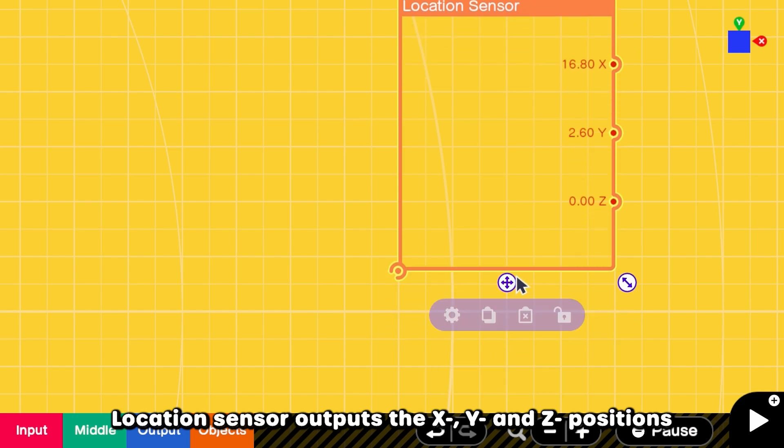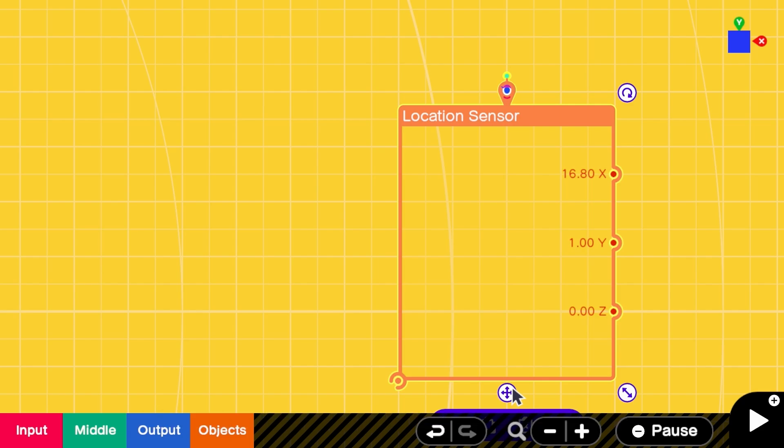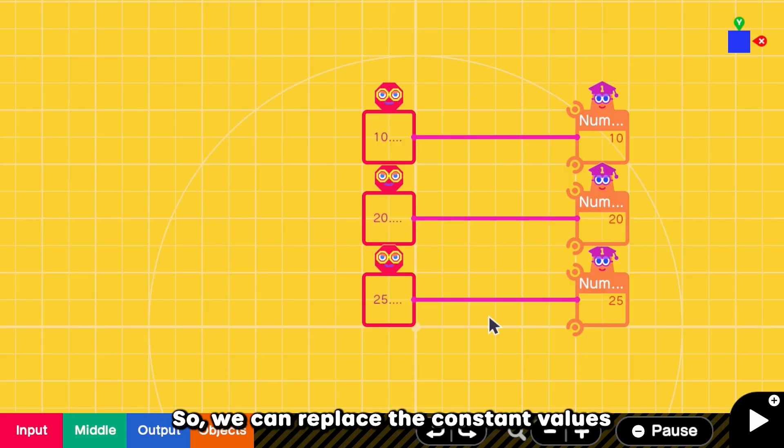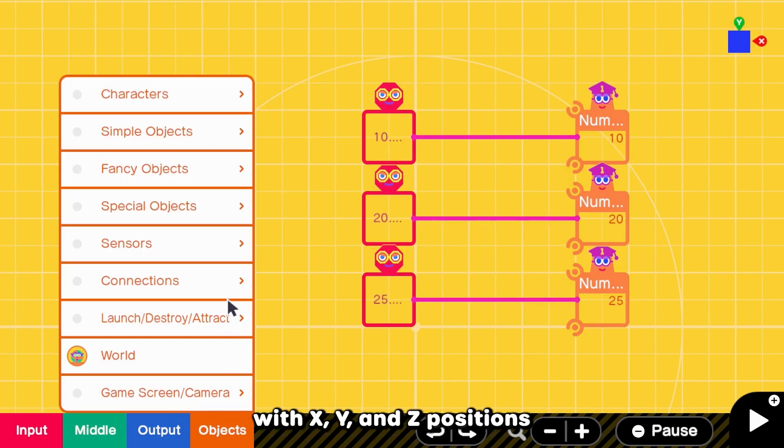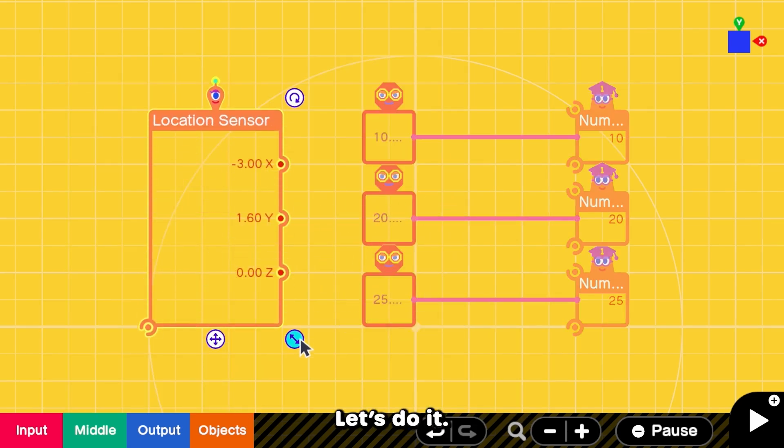Location sensor outputs the X, Y, and Z positions based on its location on the programming screen. So we can replace the constant values with X, Y, and Z positions from the location sensor. Let's do it.